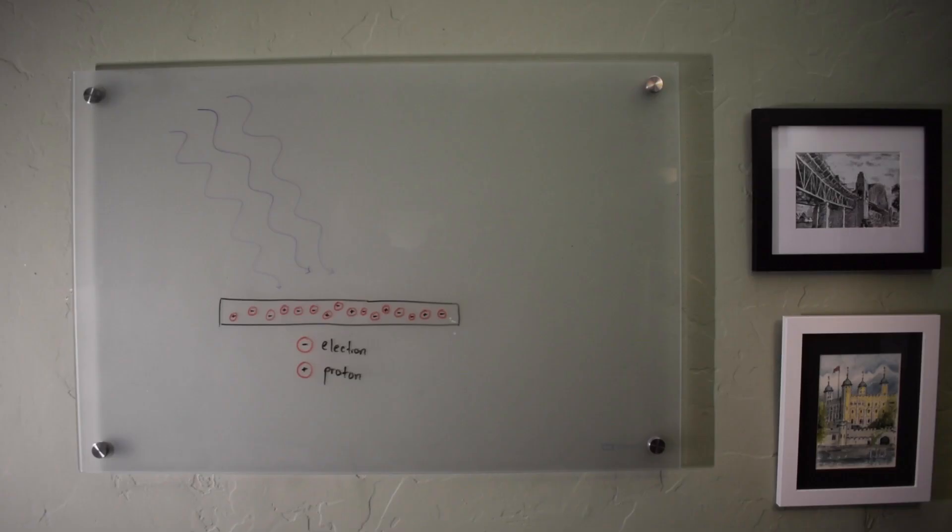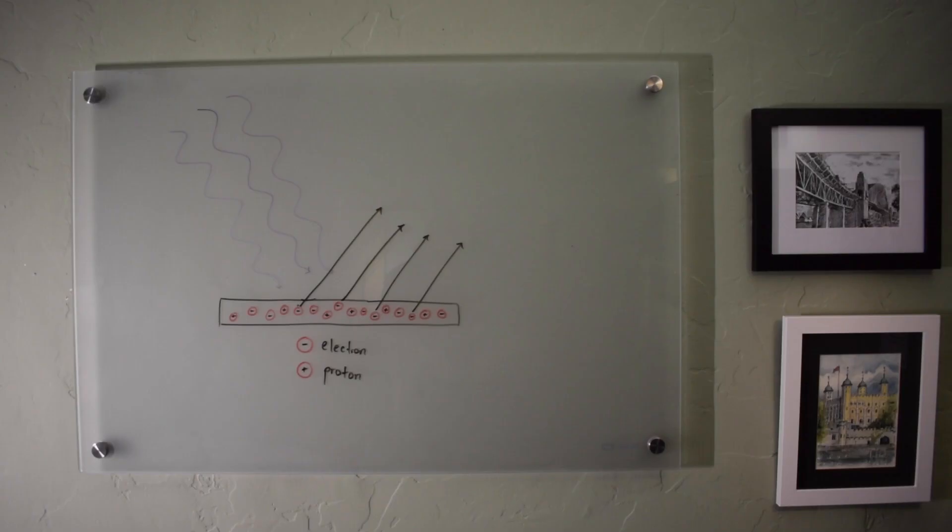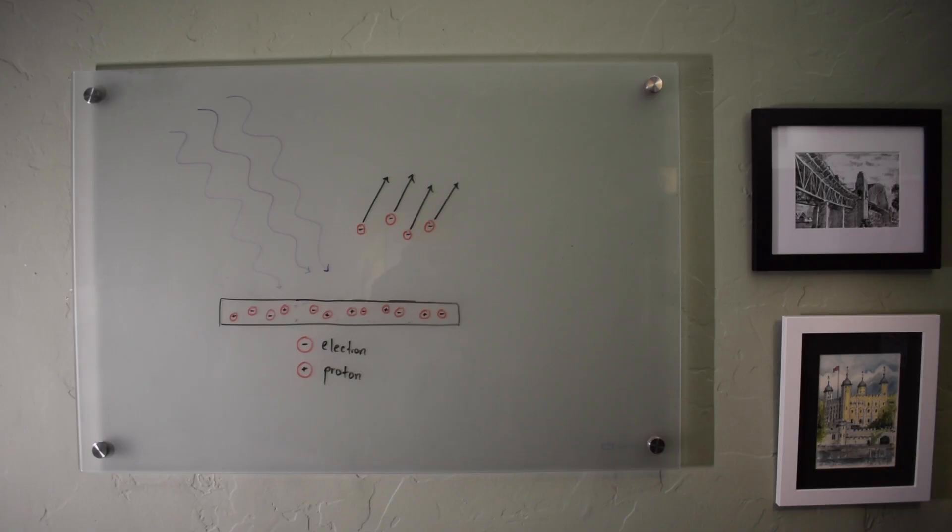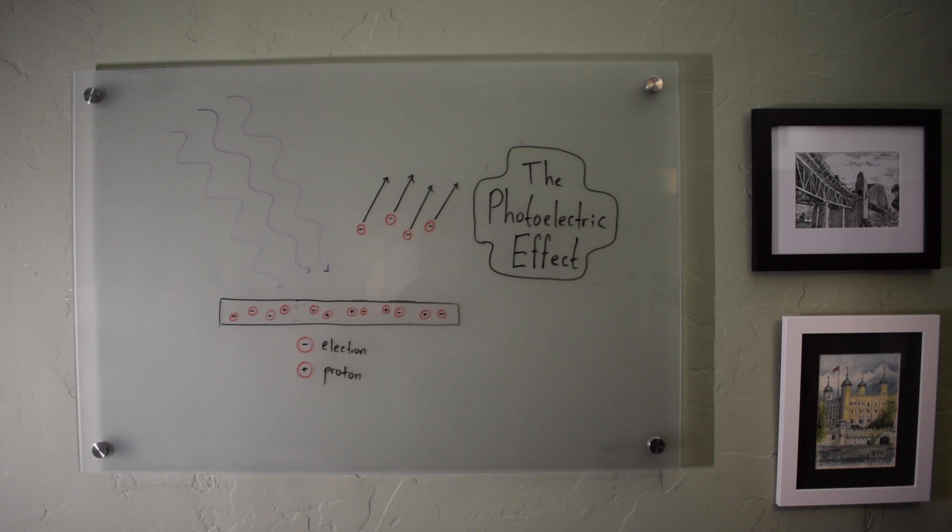He noticed that if you shine light onto a charged surface, or a surface with more electrons than protons, the excess electrons would begin getting ejected from the surface, and eventually the surface would lose all of its excess charge. This phenomena is known as the photoelectric effect.